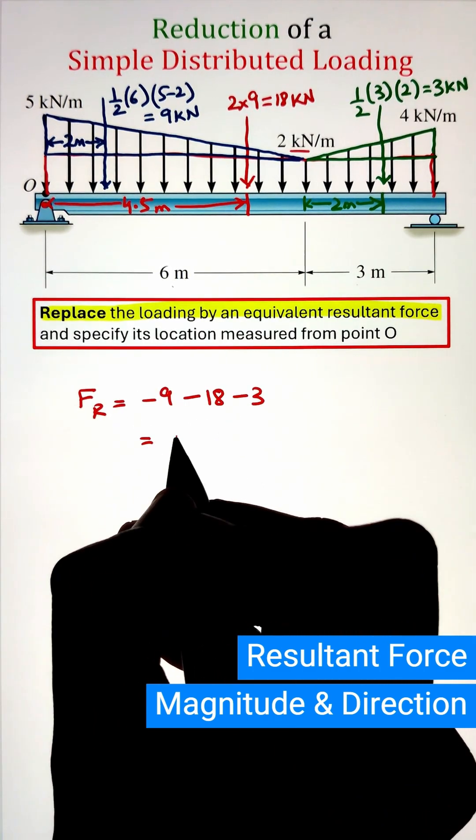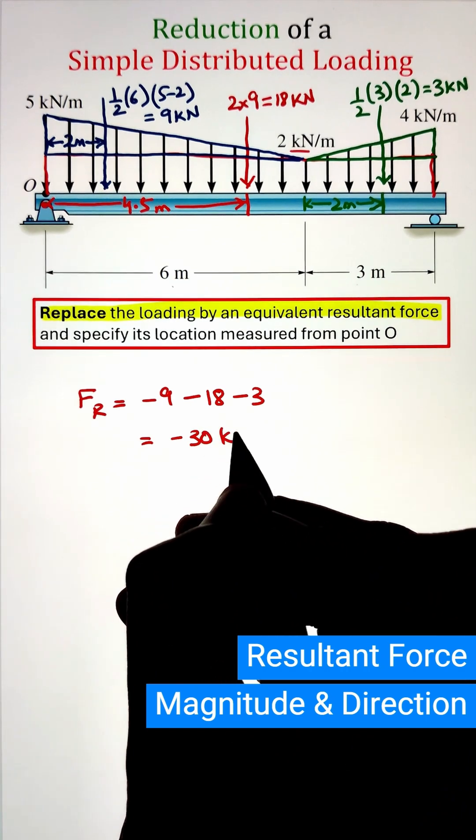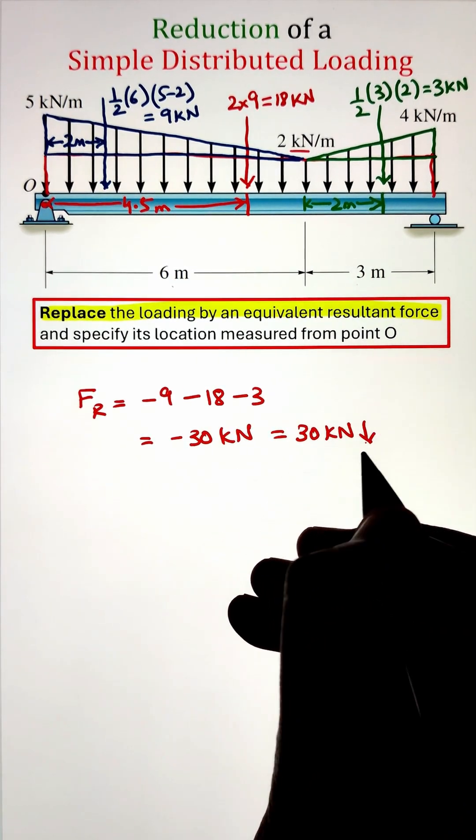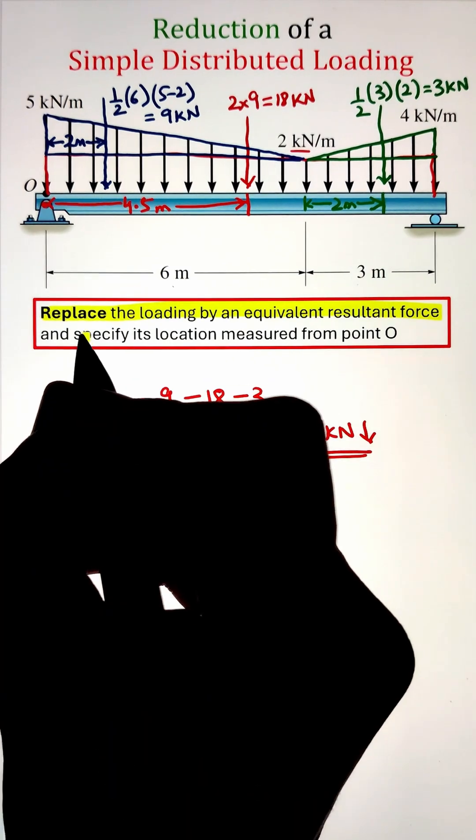Next, adding them all together gives us a final resultant force of negative 30 kilonewton. Here, the negative sign is indicating that the force is pointed downwards.